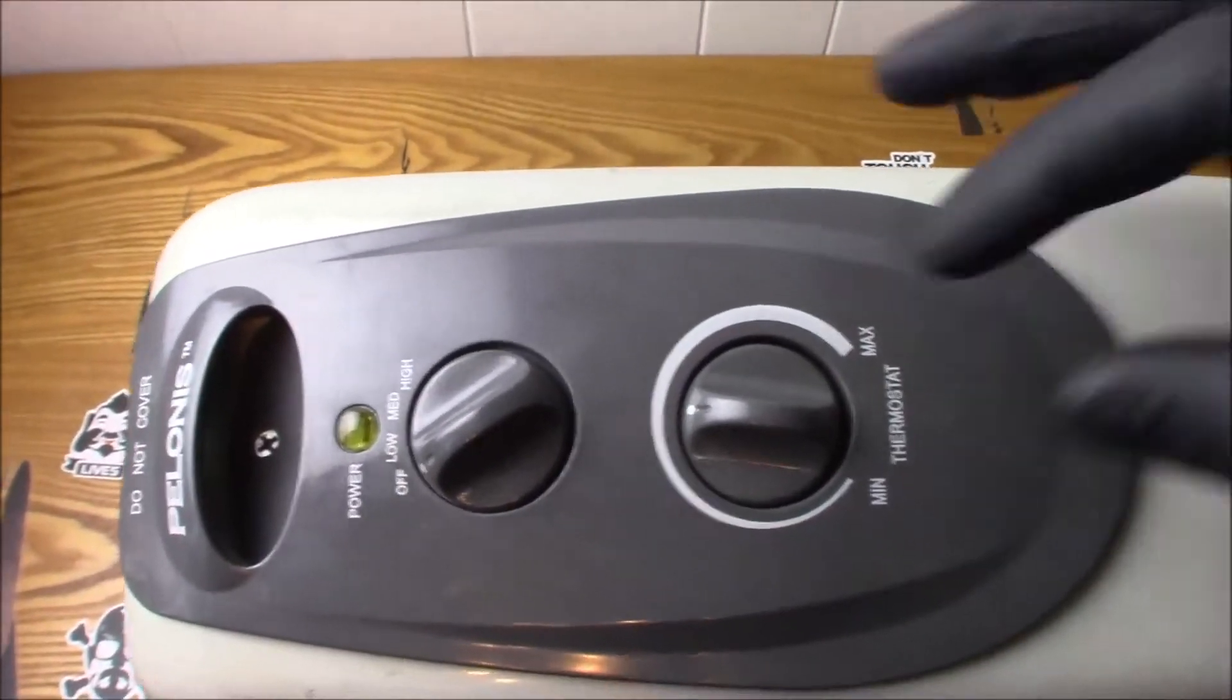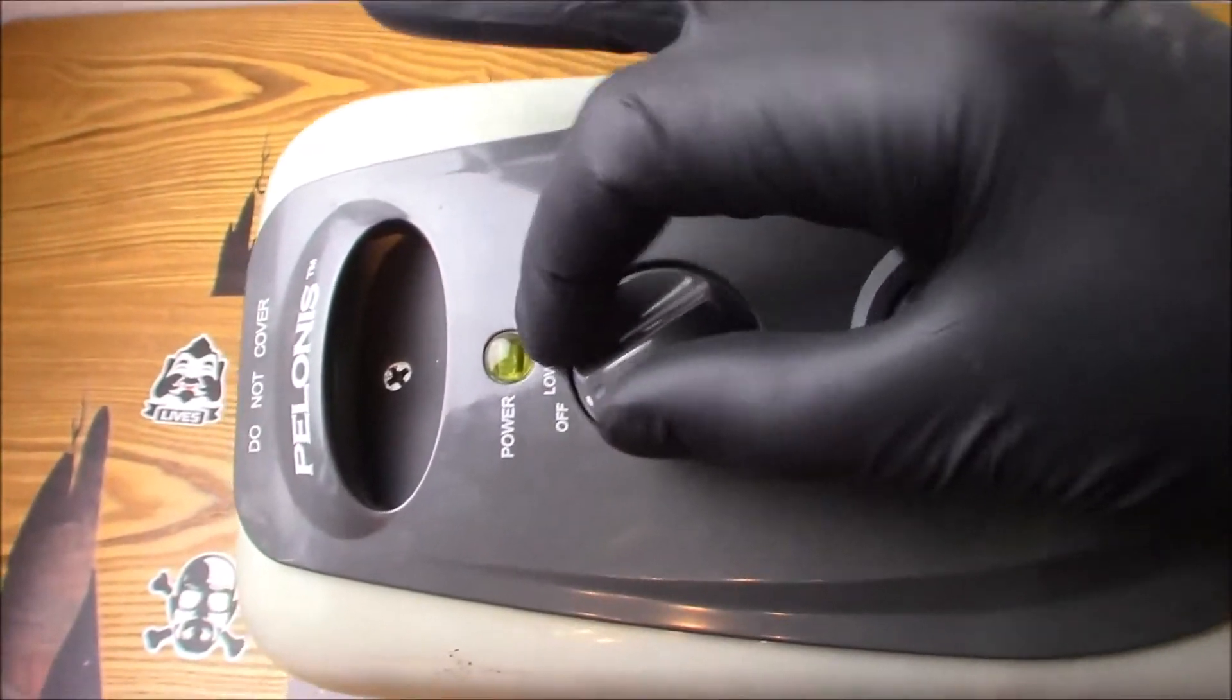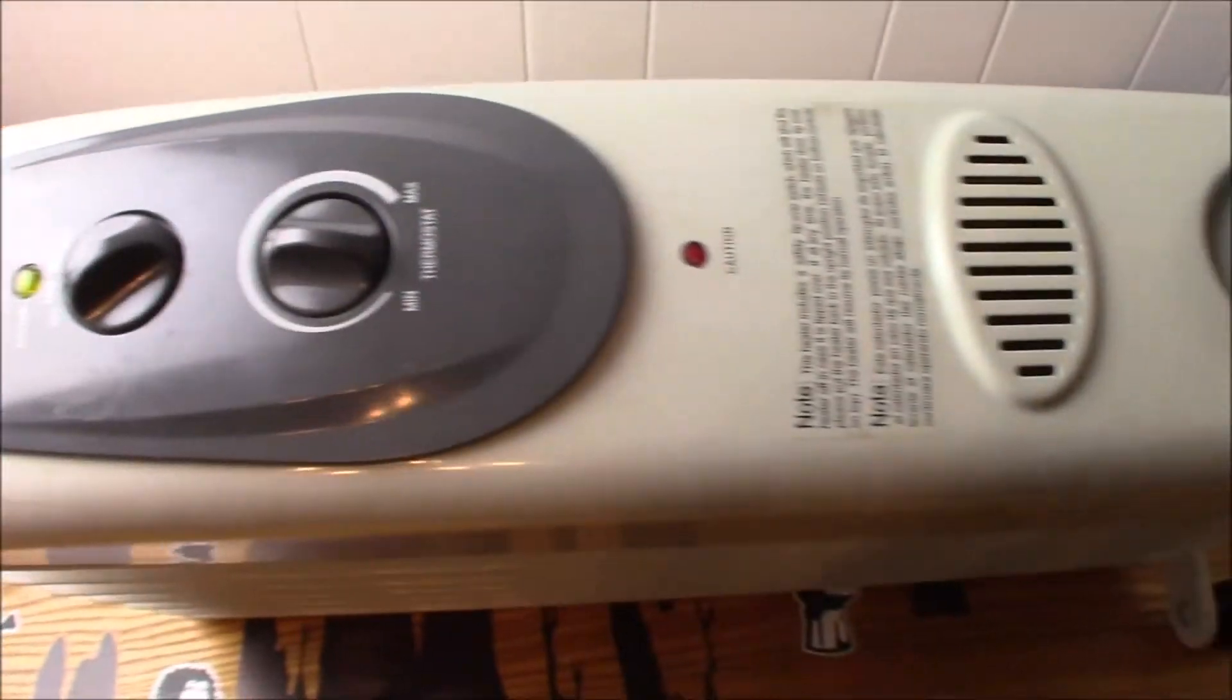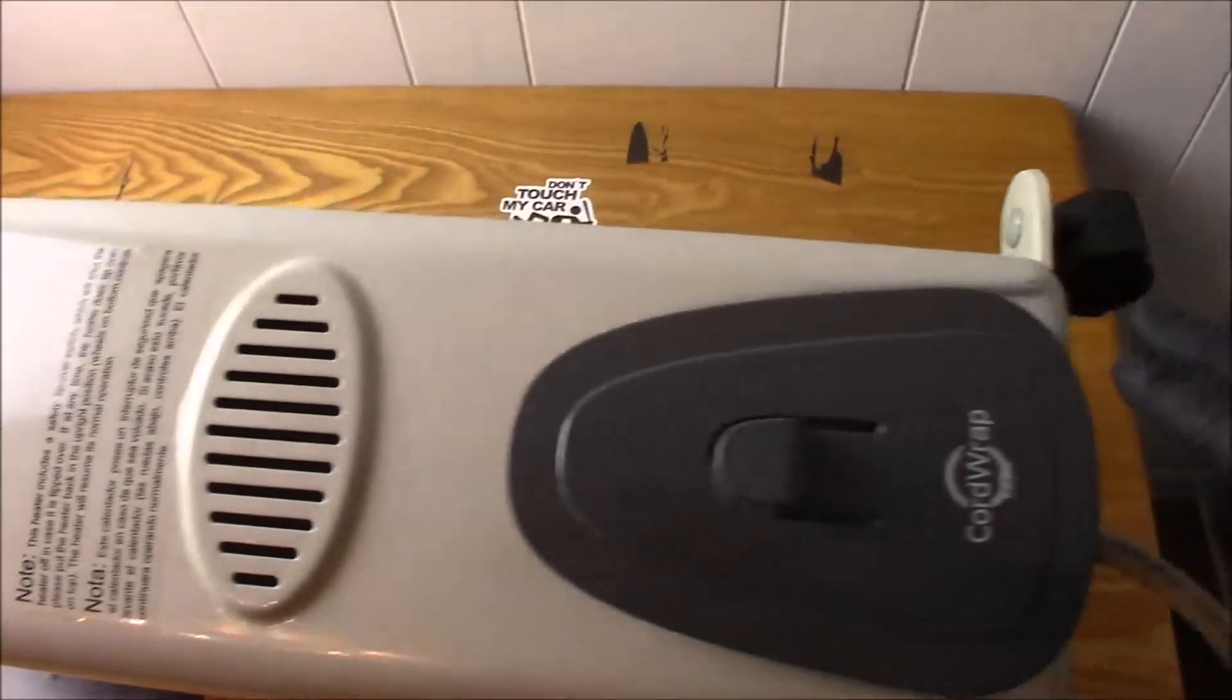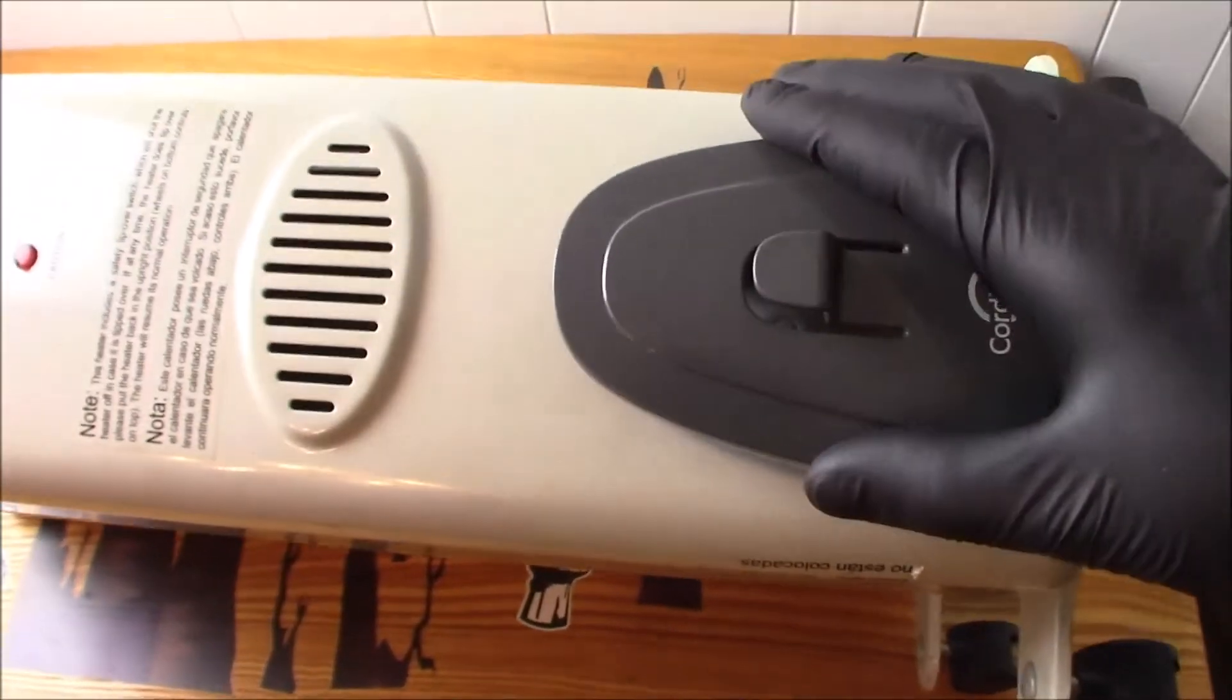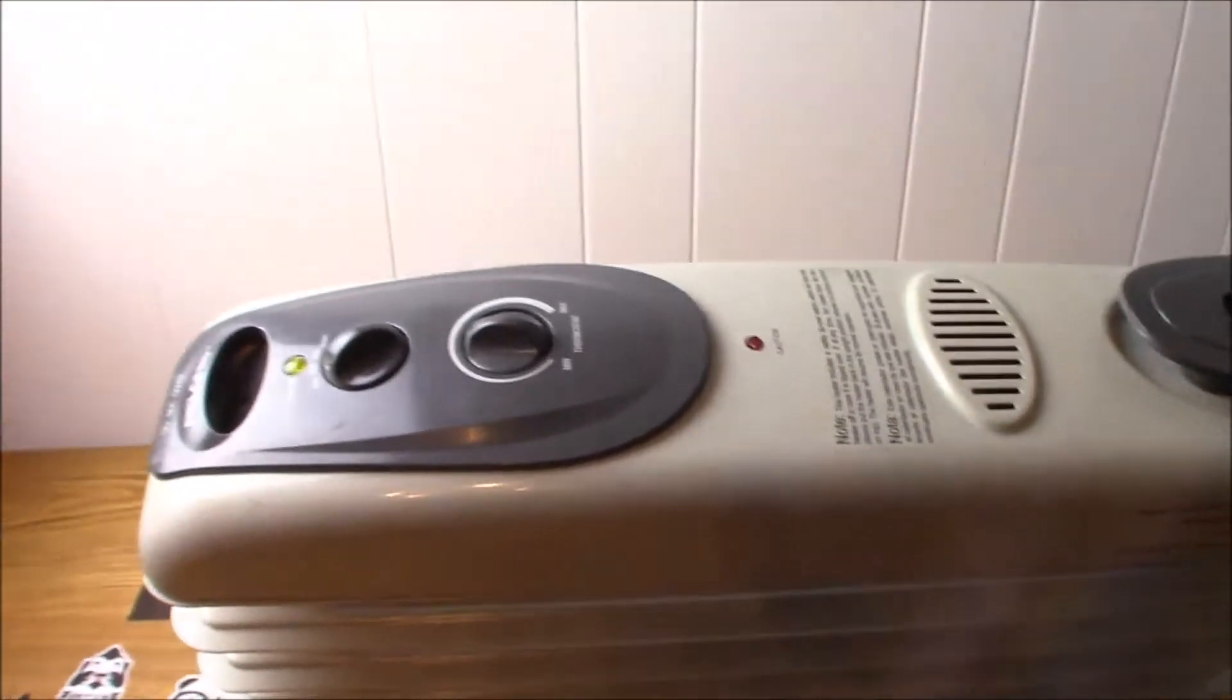Here you can see the thermostat, temperature control. It has a warning light right here, and then it has a cable wrap right here that you wrap the cord around the system. Now I'm going to be taking it apart.